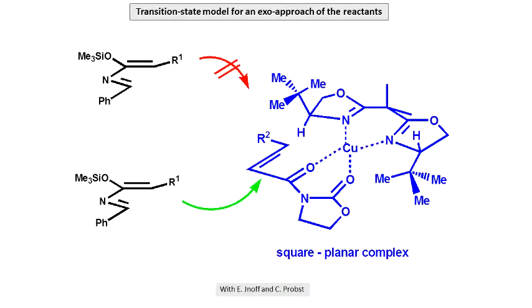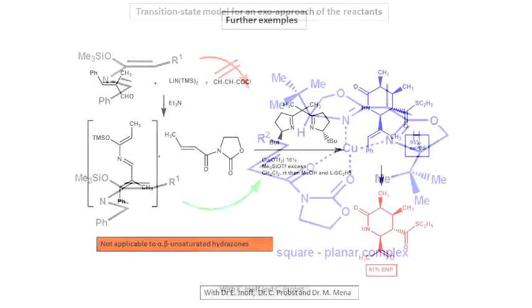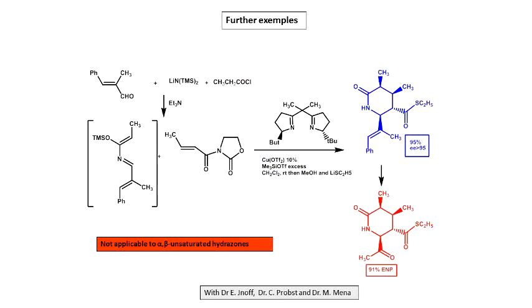The transition state model is the one developed by David Evans and Corey and others — nothing special there except that we have exo selectivity. We have the square planar complex, and the approach is blocked by the tert-butyl group.